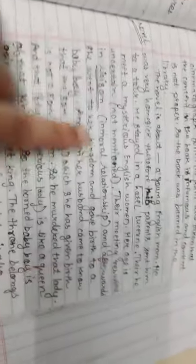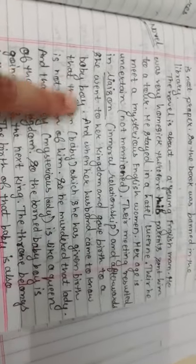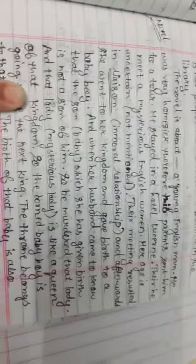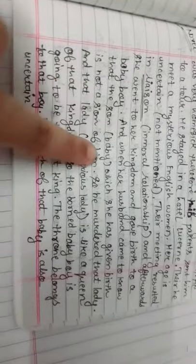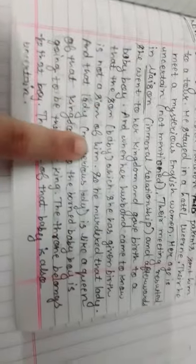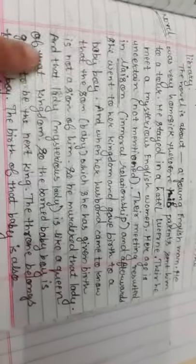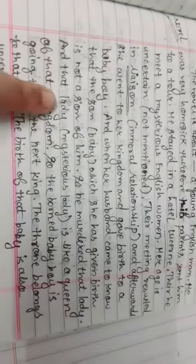Afterwards, she went to her kingdom and gave birth to a baby boy. When her husband came to know that the son she had given birth to was not from him, that person murdered that lady.